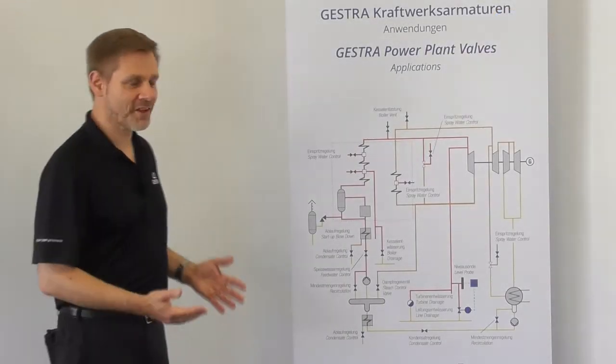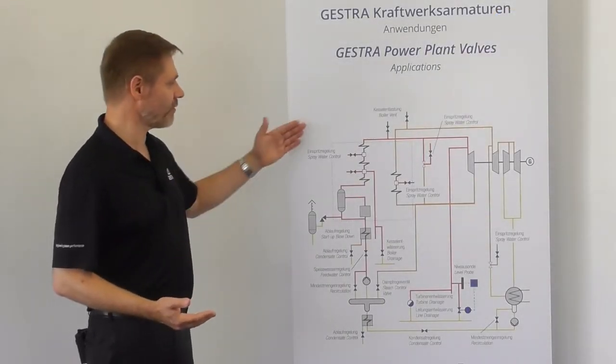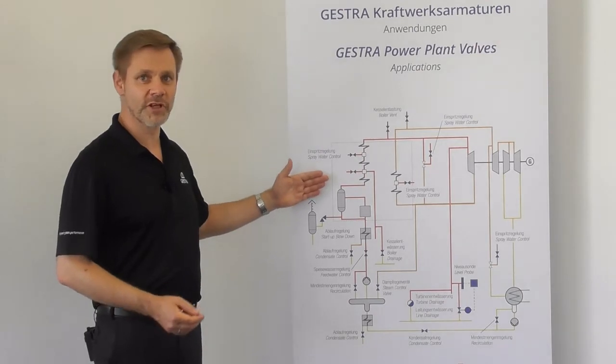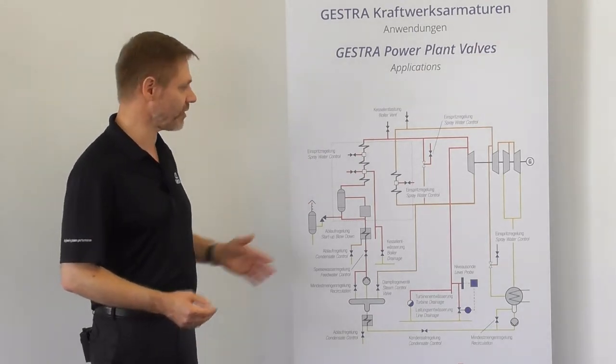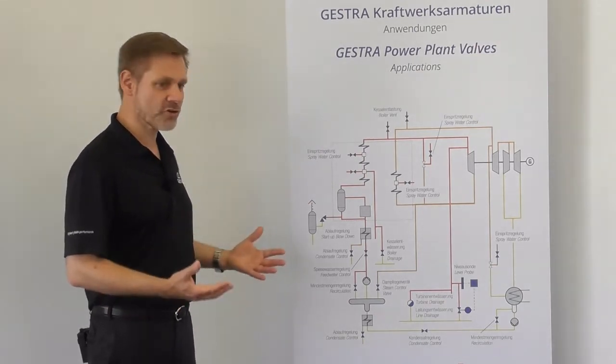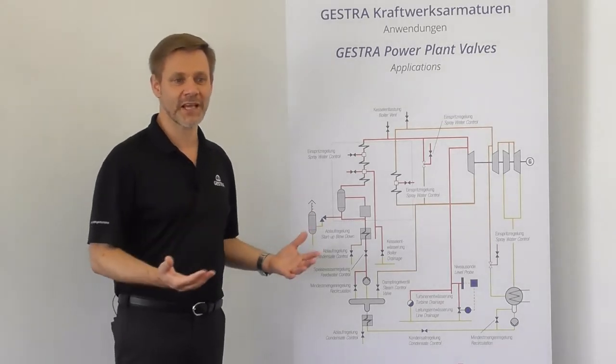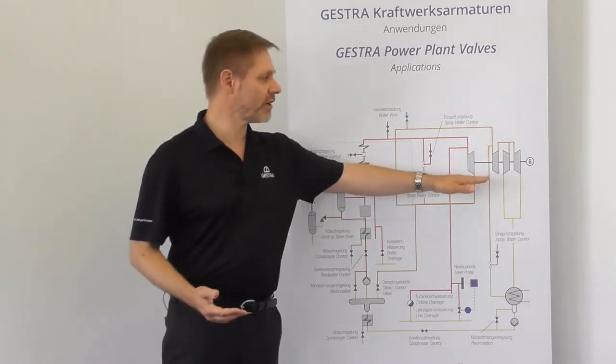At first, let's have a look together at the simplified scheme of a steam water cycle of a power station. The power station has the task to generate electric power with a generator at the turbine.